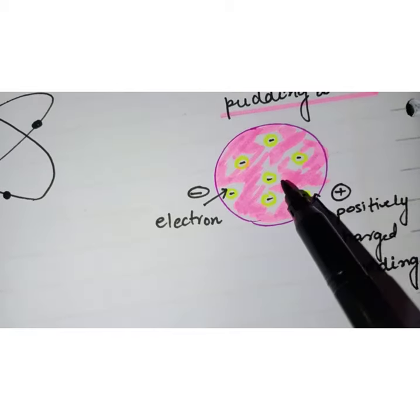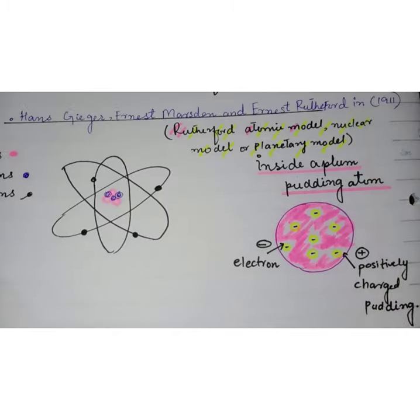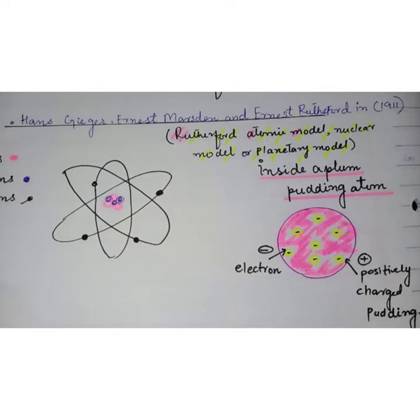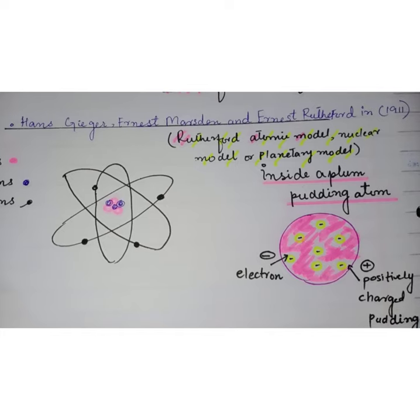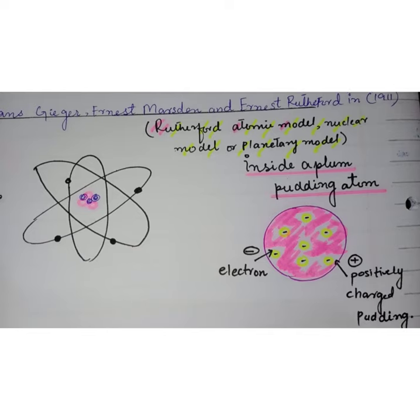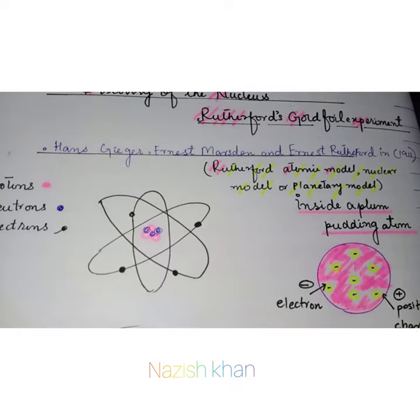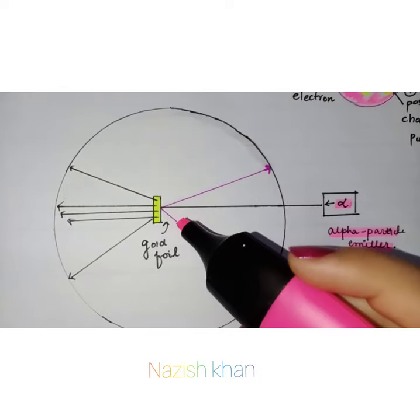But it turned out not to be true. Now we will see how Rutherford and his colleagues showed that the atom had a nucleus and showed that the plum pudding model was not right.